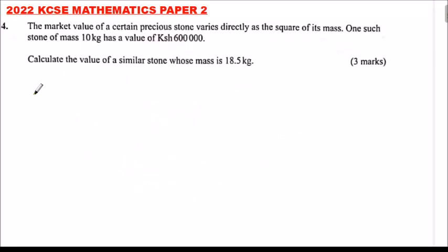This is 2022 KCSE mathematics paper 2 number 4. We are told the market value of a certain precious stone varies directly as a square of its mass. One such stone of mass 10 kg has a value of 600,000. Calculate the value of a similar stone whose mass is 18.5 kg.